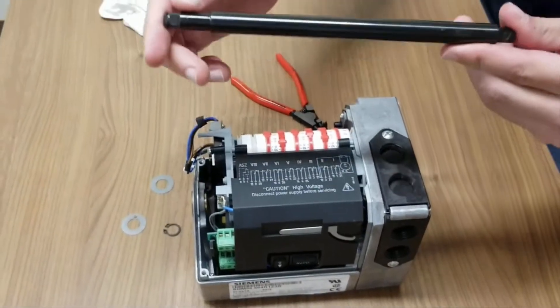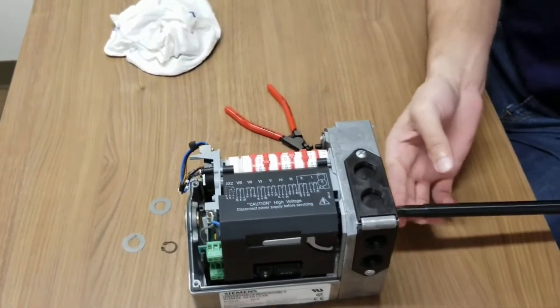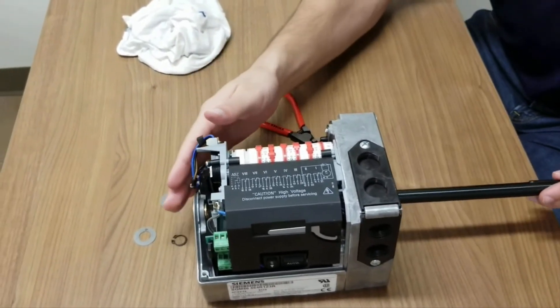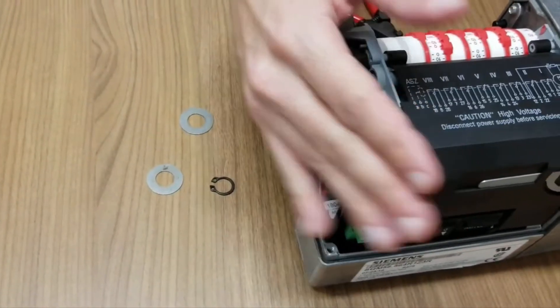Now we're ready to install the new shaft. So first, we're going to slide the shaft into the actuator, but not all the way, because we want to leave some room to install the first washer.